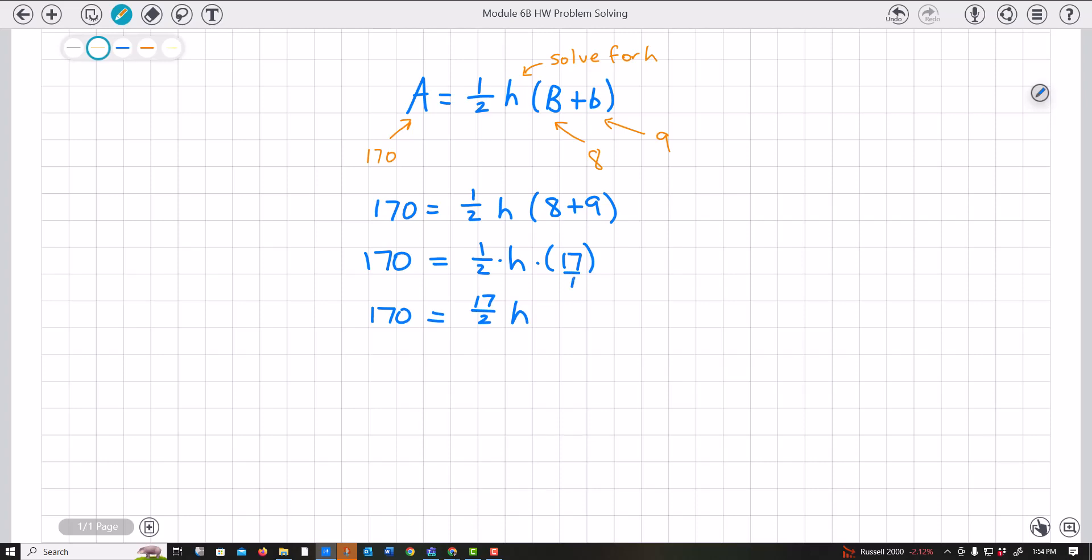Now I can multiply both sides by 2 over 17. So I'm just flipping this so I can cancel it. So I have 2 over 17 times 170 over 1.